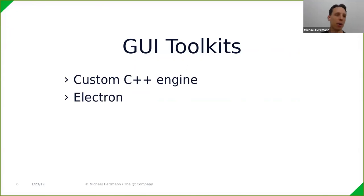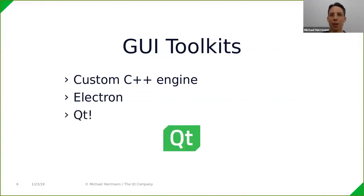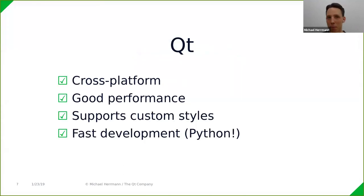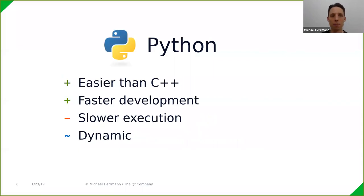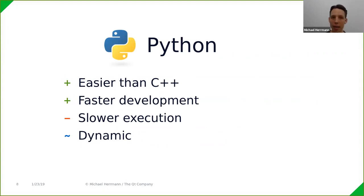I considered several other GUI frameworks, but they were either too slow, not cross-platform, or didn't support custom UI styles to the extent I needed. Then I found Qt, and Qt ticks all the boxes: it's cross-platform, has great performance, supports custom styles that are uniform across operating systems, and enables fast development — especially if you use it with Python.